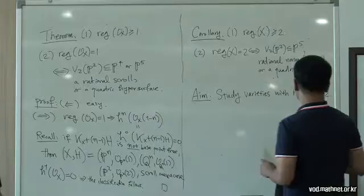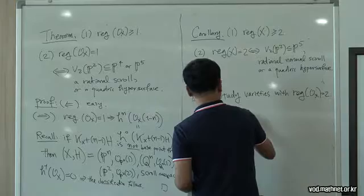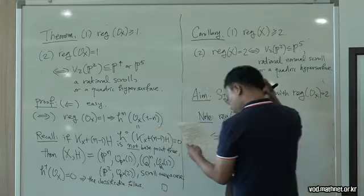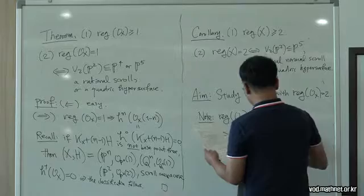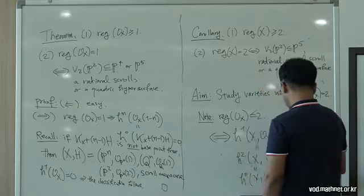The aim of today's talk is to generalize this result to the next-to-extremal case: the regularity of the structure sheaf is equal to 2. Note that since we are working in characteristic zero, showing the regularity of the structure sheaf equals 2 is equivalent to showing the vanishing of these three cohomology groups.